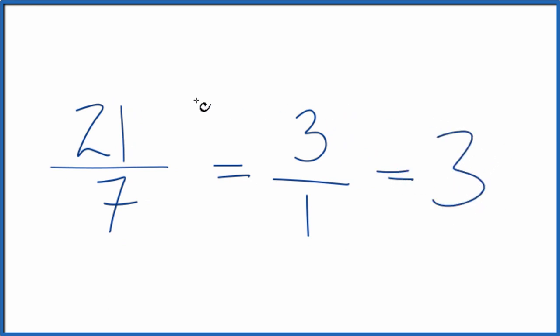So in answer to our question, the fraction 21 sevenths, you can simplify that down to 3 over 1 or just 3. This is Dr. B.